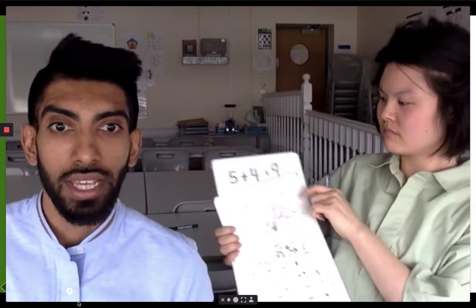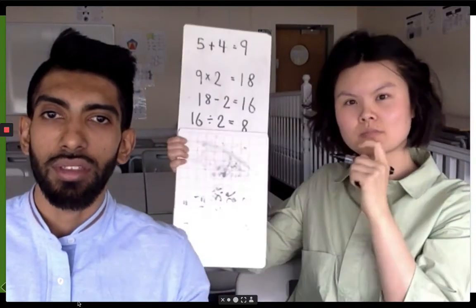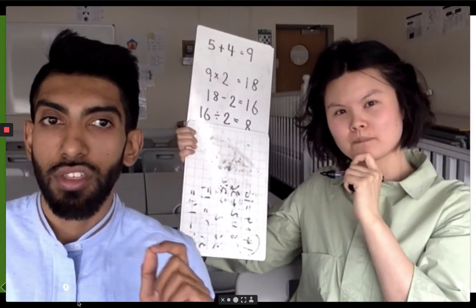Next, double it. Subtract two, half it. And the final step is to take away the number you originally thought of.